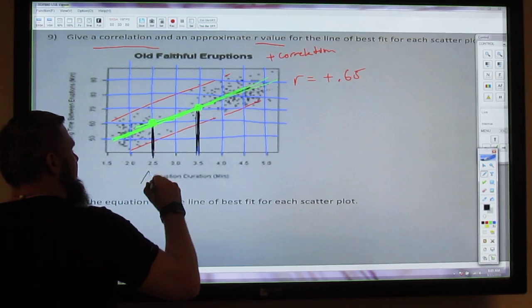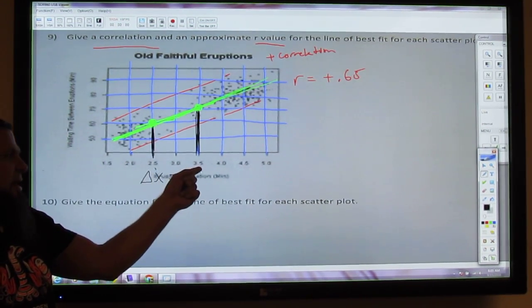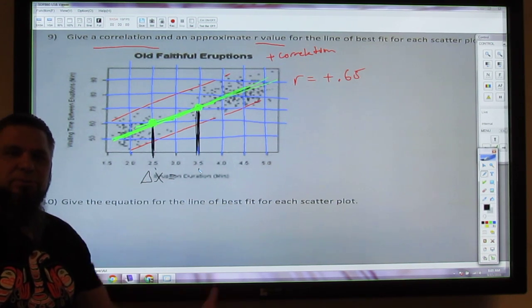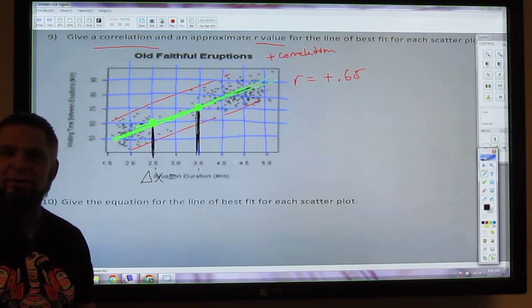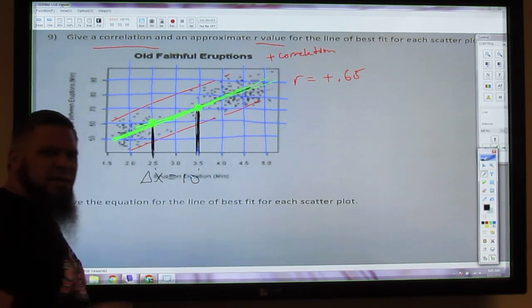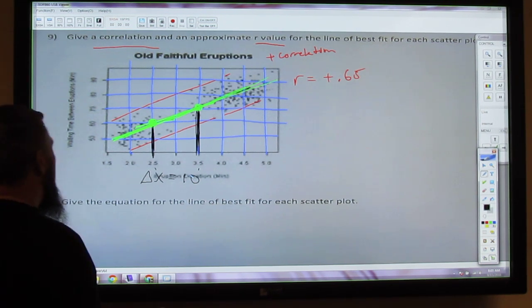And so that's your delta x. And delta x goes from 25 to 35. So what's the difference between 25 and 35? 10. You see that? We come up with a difference there. Does that make sense?